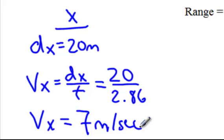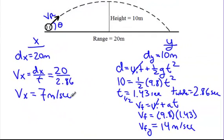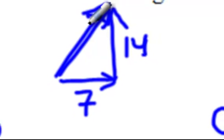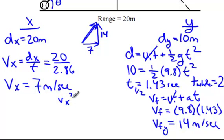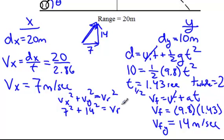Something we've got to remember is the velocity in x never changes — we have a constant velocity. Velocity in y changes, however. Initially, my velocity in y is 14 meters per second. When the ball comes back down to the ground, my velocity in y is again 14 meters per second. So if we draw a quick triangle: our velocity in x is 7 meters per second, our velocity in y is 14 meters per second. To find the resultant vector, I use vx squared plus vy squared equals vr squared — the Pythagorean theorem. So I do 7 squared plus 14 squared, and square root the result. My resultant velocity is 15.65 meters per second.